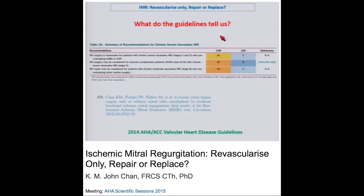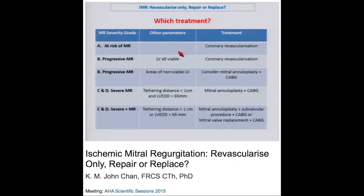The AHA/ACC guidelines, published last year but before the CTS network trials, include the RIME trial. They state mitral valve surgery may be considered for severely symptomatic patients with chronic severe secondary MR, classifying RIME trial patients as severe. Mitral valve repair may be considered for patients with chronic moderate secondary MR (stage B) undergoing myocardial surgery. If undergoing CABG or AVR, it is reasonable to address chronic severe secondary MR.